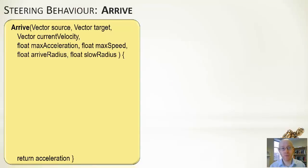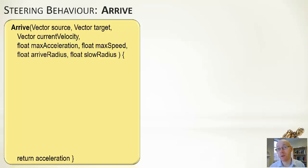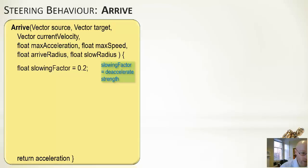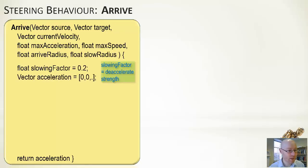The arrive algorithm takes our source vector, our target, our current velocity (to know if we're going to accelerate or decelerate), our maximum acceleration, our maximum speed, our arrive radius (when we stop), and our slow radius (when we start slowing down). There's also a slowing factor to control how strongly we accelerate or decelerate. Our output acceleration is initialized to zero — this covers the case where we've effectively stopped.